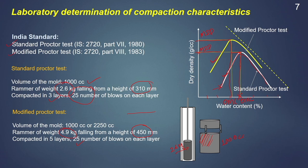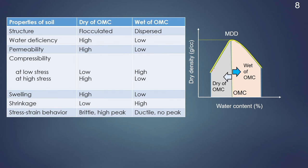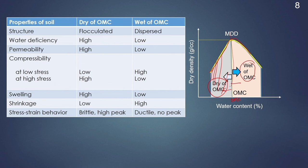For a modified proctor test, we can also get the maximum dry density and the optimum moisture content. Depending on which method we are performing, the MDD and OMC values will be different. Once we know the MDD and OMC value, we need to specify at what water content or density the soil has to be compacted in the field. There are two zones in a compaction curve: one is known as the dry of OMC and another as the wet of OMC. The portion on the left side of the peak is called dry of OMC — the water content is less than OMC. The portion on the right side is called wet of OMC — the water content is higher.